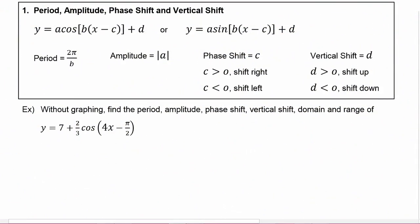Any time you're given a function in the form of y equals a cosine of quantity bx minus c plus d, or y equals a sine of quantity bx minus c plus d, you can find the period, amplitude, phase shift, and vertical shift using the constants in the function.